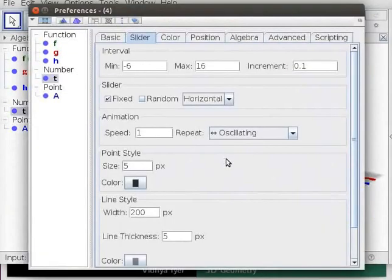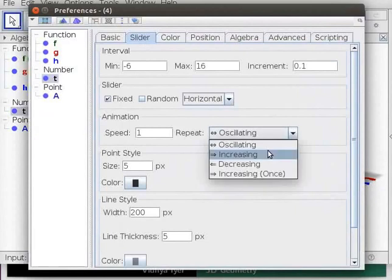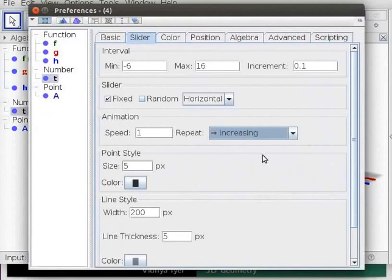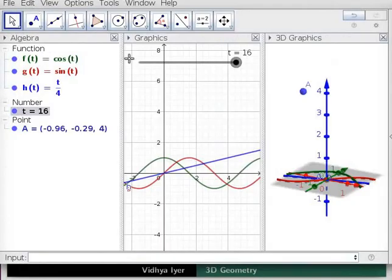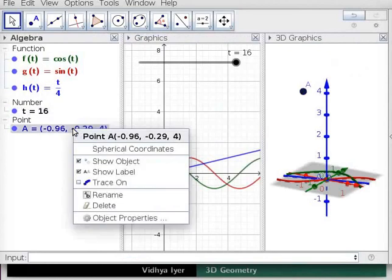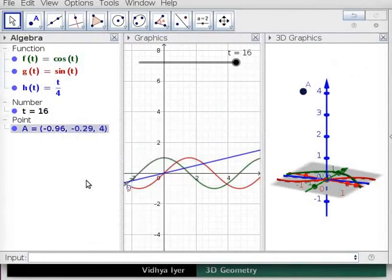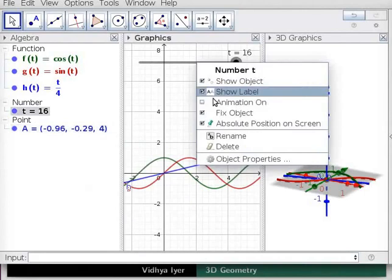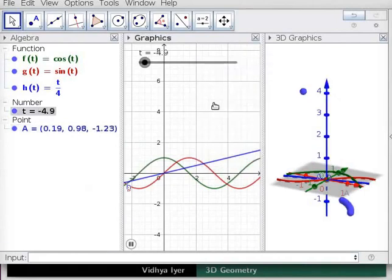Right click on slider T and click on object properties. A preferences dialog box opens. Click on slider tab. Under animation, for repeat, choose option increasing from the drop down menu. Close the preferences dialog box. In algebra view, right click on A and select trace on. Right click on slider T and check animation on.